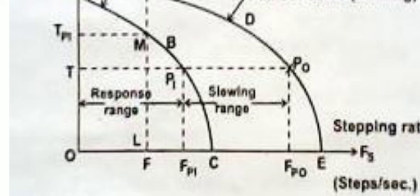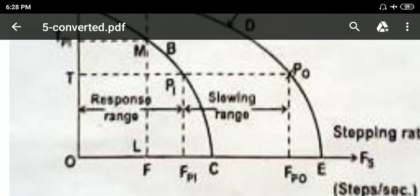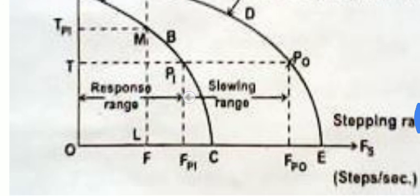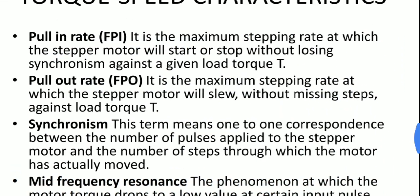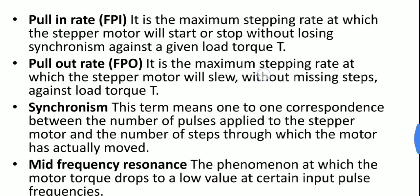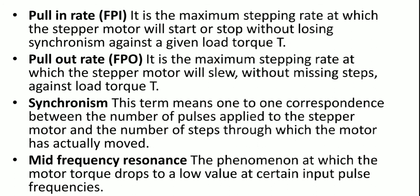The pull-in range, PIT, is also called the response range. Pull-in rate FPI is the maximum stepping rate at which the stepper motor will start or stop without losing synchronism against a given load torque T. Pull-out rate is the maximum stepping rate at which the stepper motor will slew without missing steps against the load torque T.